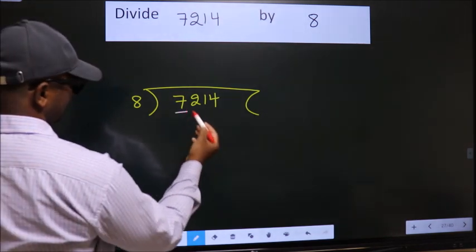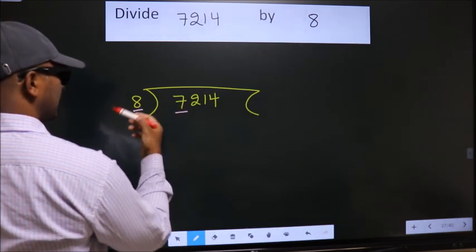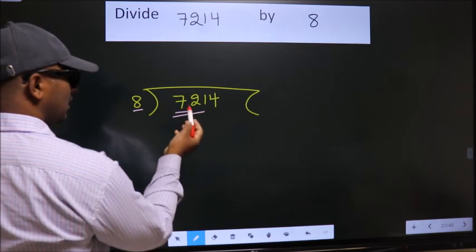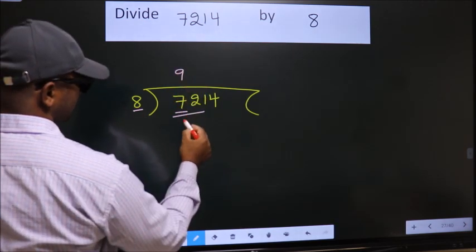Here we have 7, here 8. 7 is smaller than 8, so we should take two numbers, 72. When do we get 72 in the 8 table? 8 nines 72.